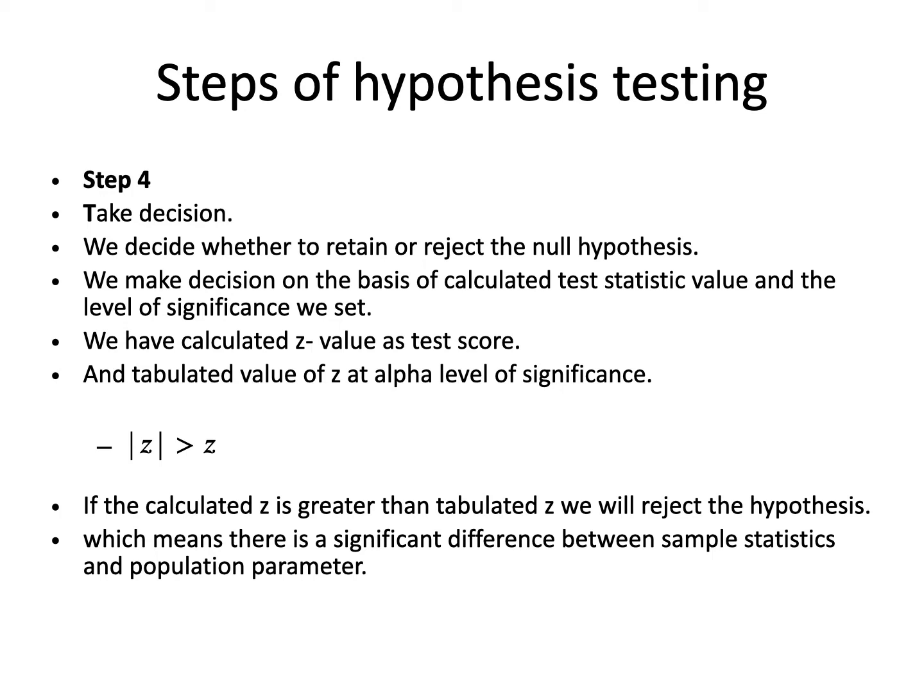When taking the decision, we use the absolute value (modulus) of z because z is symmetric about the mean and may have positive or negative values. If the calculated z is less than the tabulated z, we accept the null hypothesis — there is no significant difference between the sample statistic and the population parameter. If the calculated z is greater than the tabulated z, we reject the null hypothesis — there is a significant difference.